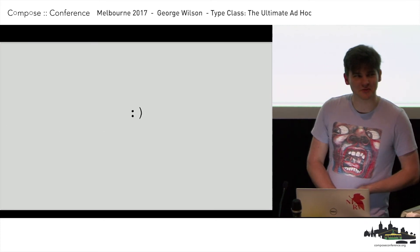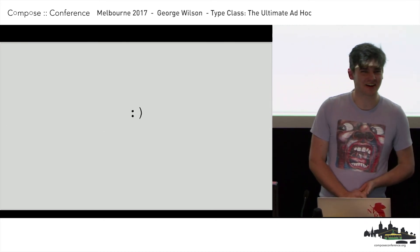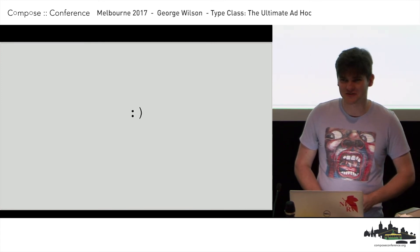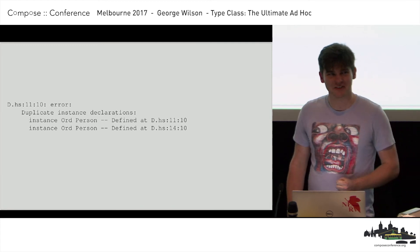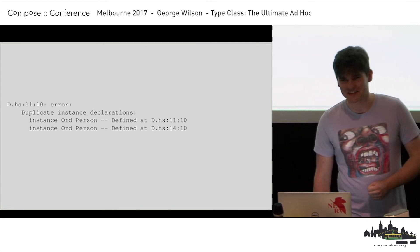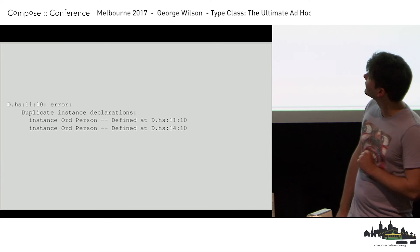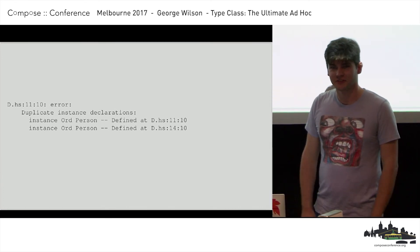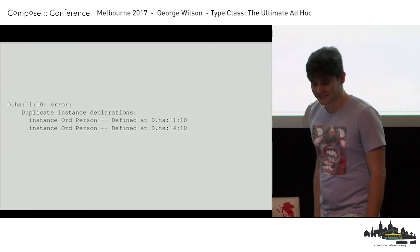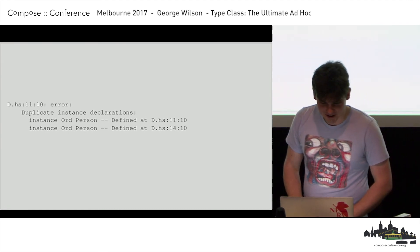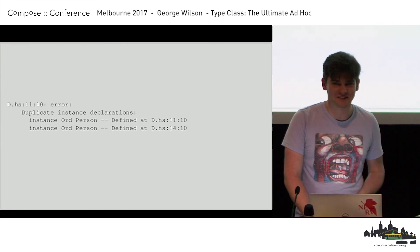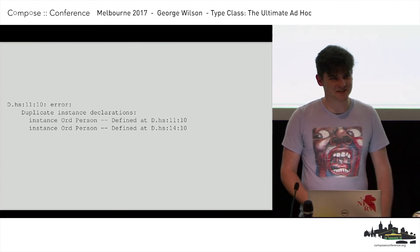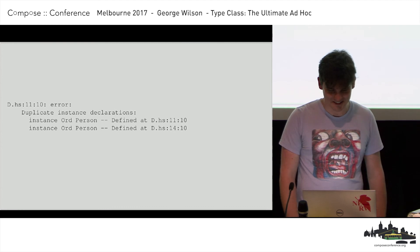But you know what makes me really happy? Compiler errors. This is a compiler error from the Haskell compiler, which says: you've given two different orderings for Person — sort it out and try again. The wrong ordering can't be picked because it's going to tell me if there's more than one. And what if I make an orphan instance? The compiler will warn about orphan instances — this is only a warning, but luckily I compile with `-Werror`, as I assume all of you do, so this becomes an error as well for me.